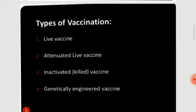There are several types of vaccines available in the market: live vaccines, attenuated live vaccines, inactivated killed vaccines, and genetically engineered vaccines.